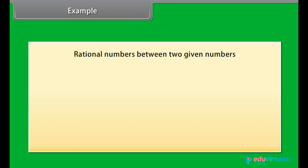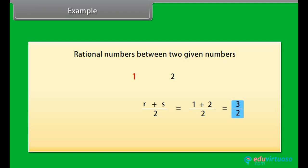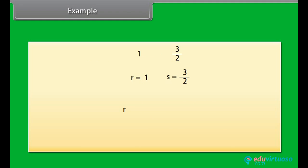Let's now learn how to find rational numbers between two given numbers. The given numbers here are 1 and 2. Say, 1 is R and 2 is S. To find the rational numbers between R and S, we have to add R and S and divide the sum by 2. So we get 1 plus 2 is equal to 3 by 2. Therefore, the rational number between 1 and 2 is 3 by 2. Similarly, the rational number between 1 and 3 by 2 is 5 by 4.